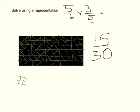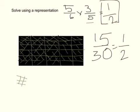15 and 30 can be reduced, simplified, or reduced to 1 half. So the answer is 1 half. And that's about it. Bye, I guess.